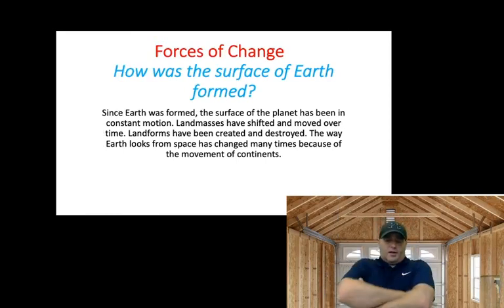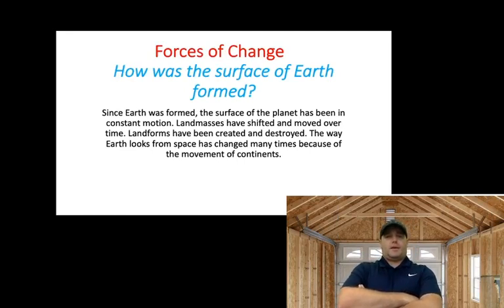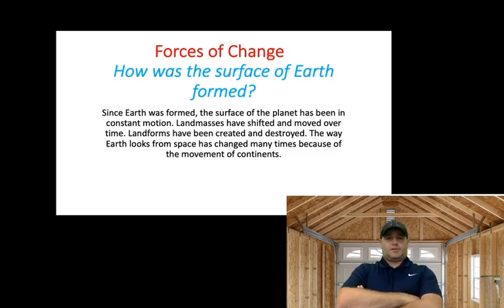How was the surface of the Earth formed? Since Earth was formed, the surface of the planet has been in constant motion. Land masses have shifted and moved over time. Land forms have been created and destroyed. The way Earth looks from space has changed many times because of the movement of continents.